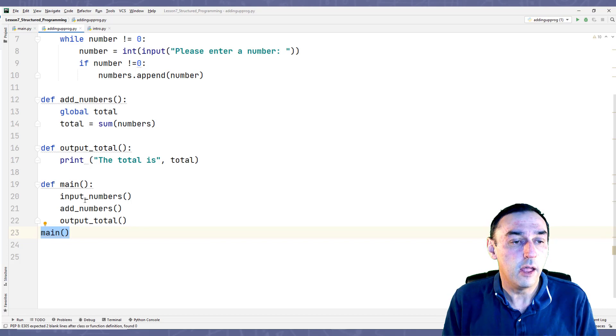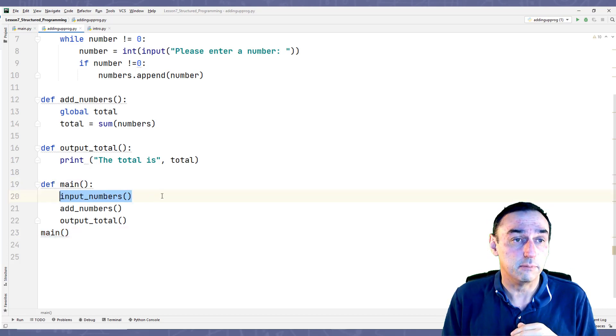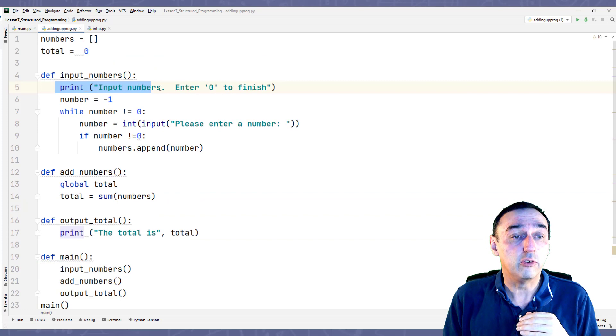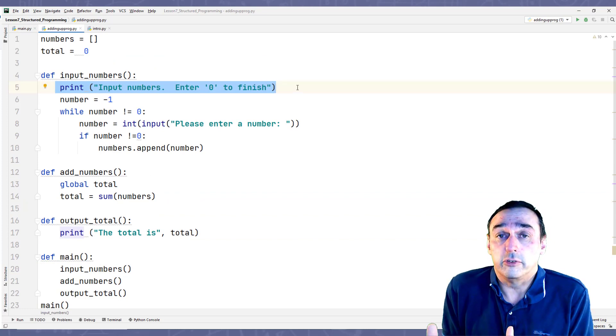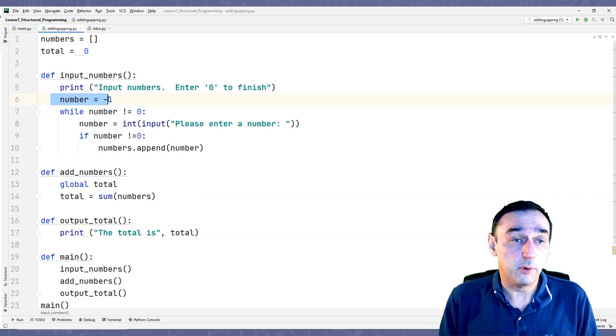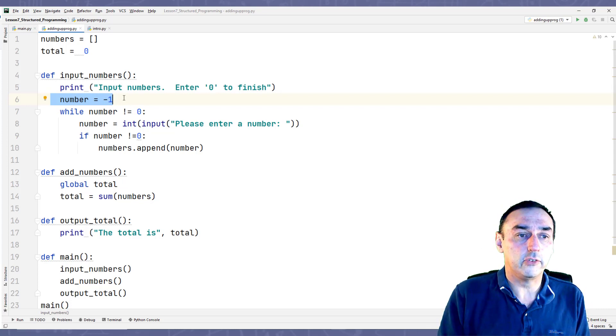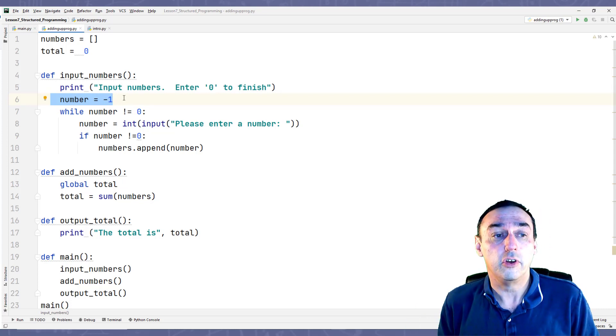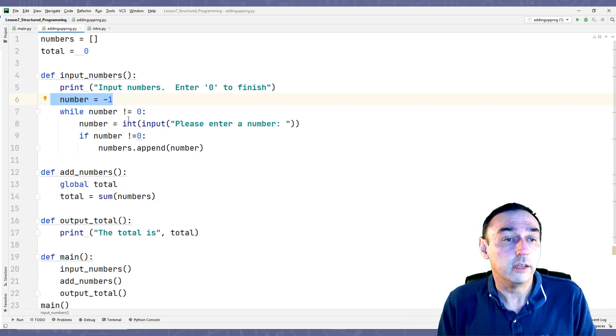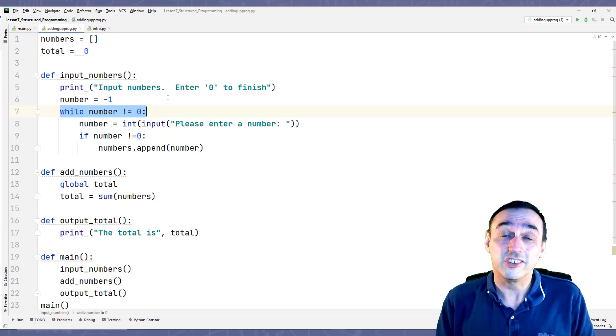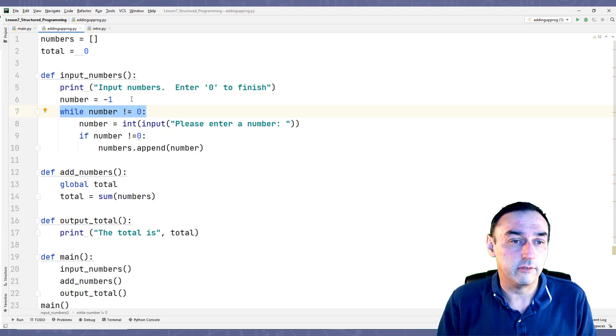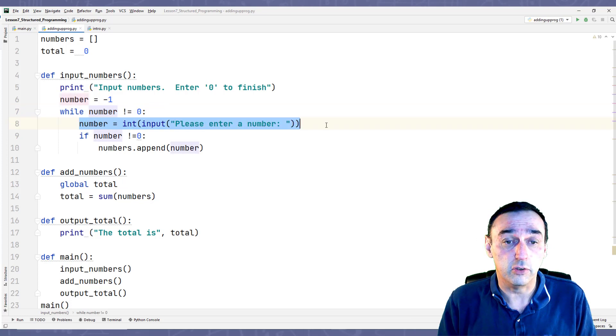So main will be called up here, it will run this function input_numbers, which goes up here. This will print out to prompt the user for an input. We set number to minus one, because otherwise the while loop won't start. So that's our default number, if you like. And then while, so while the number does not equal zero, in other words, we're going to keep looping until I enter zero.